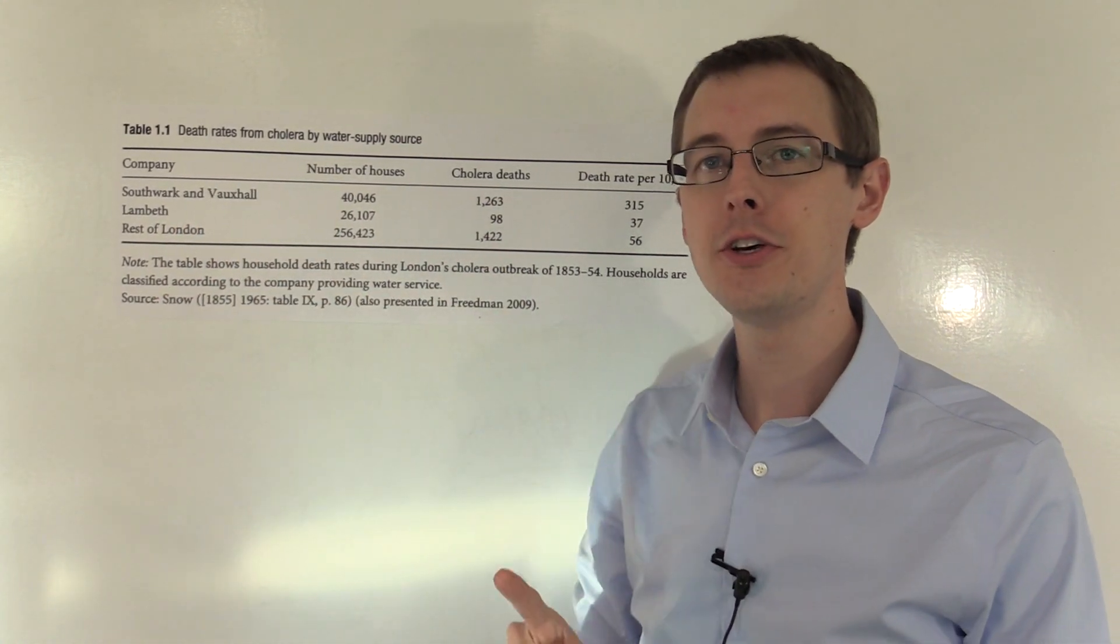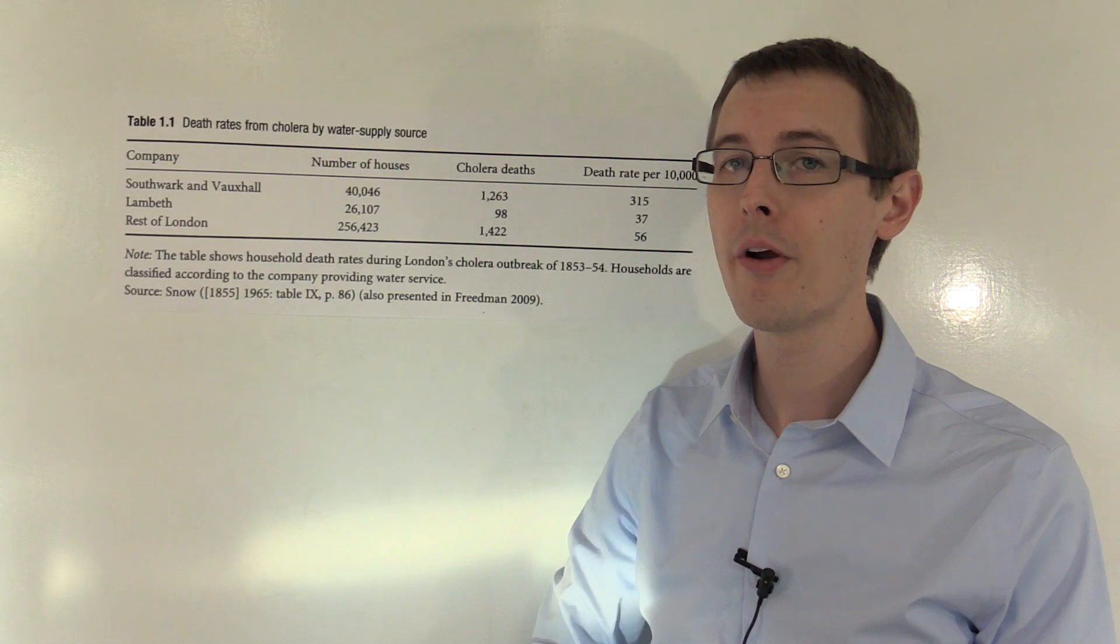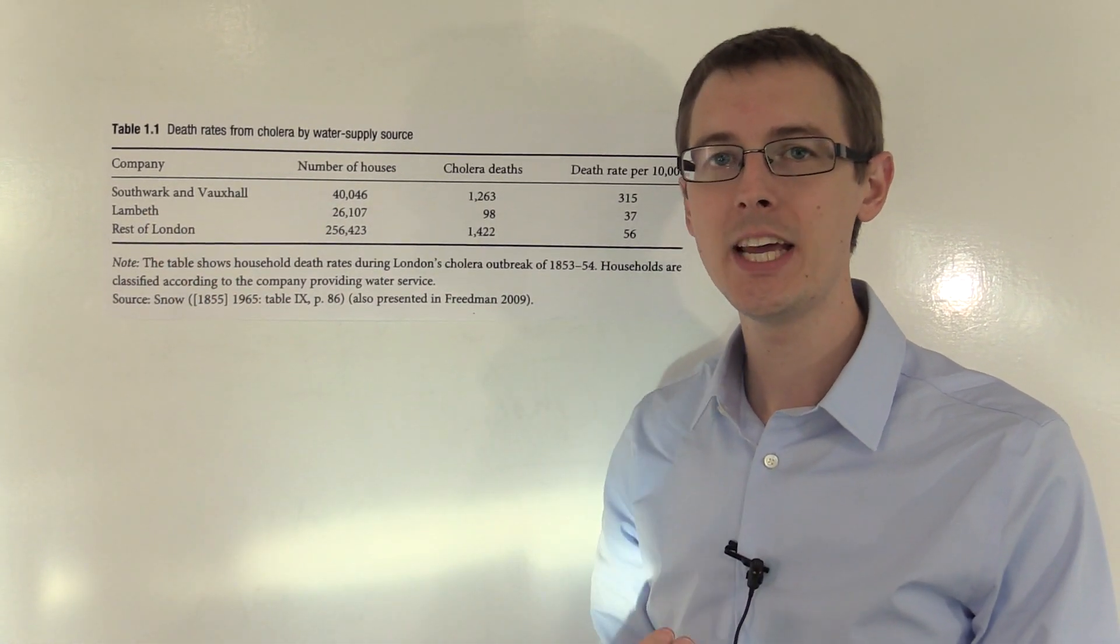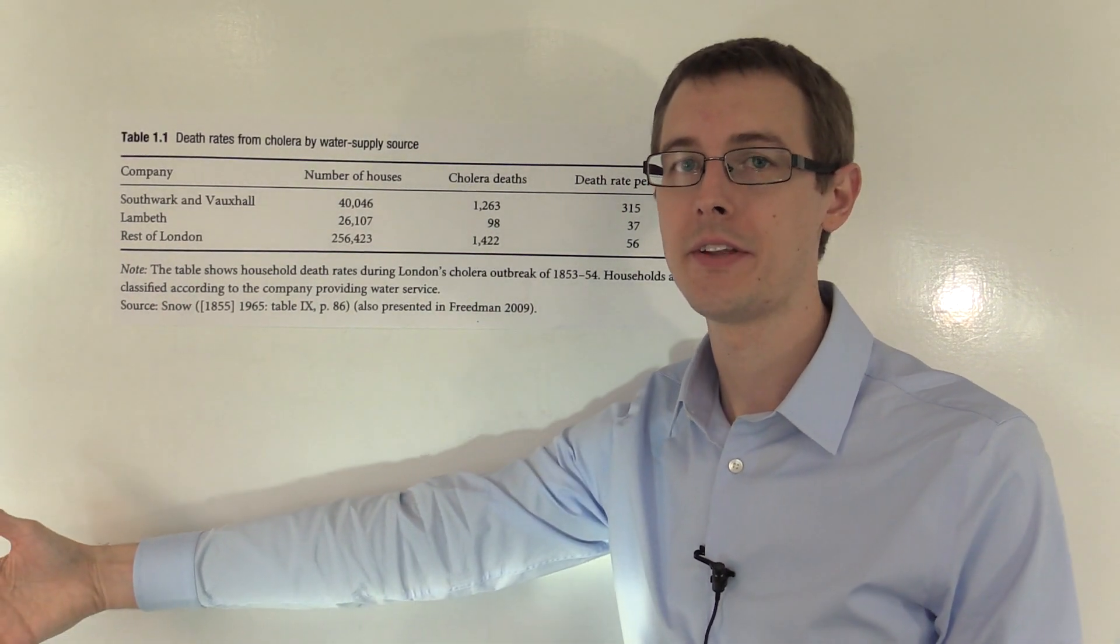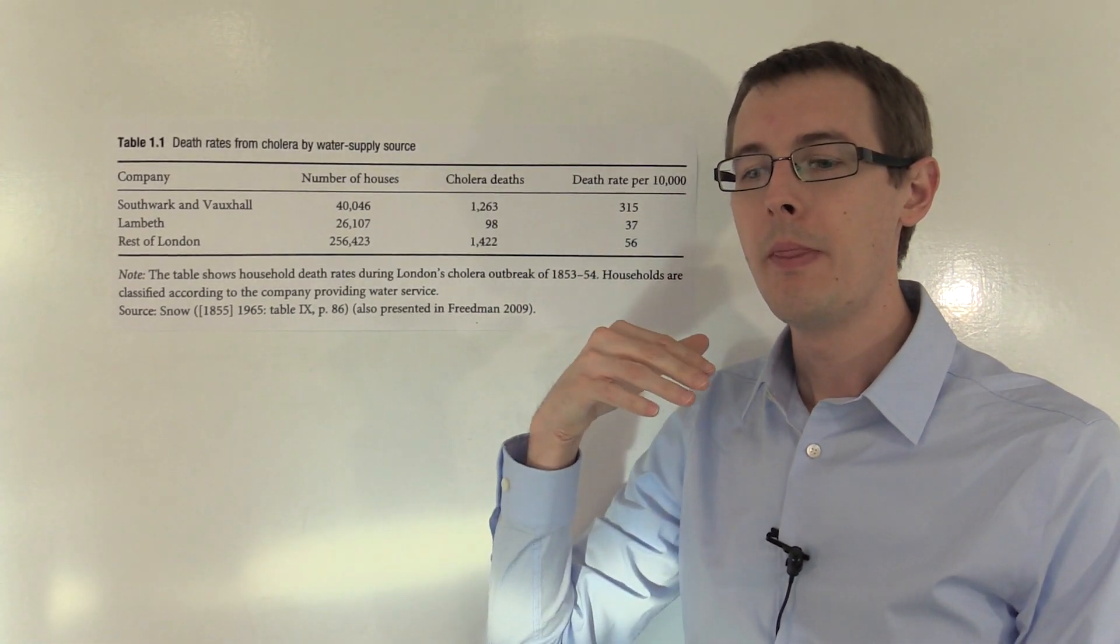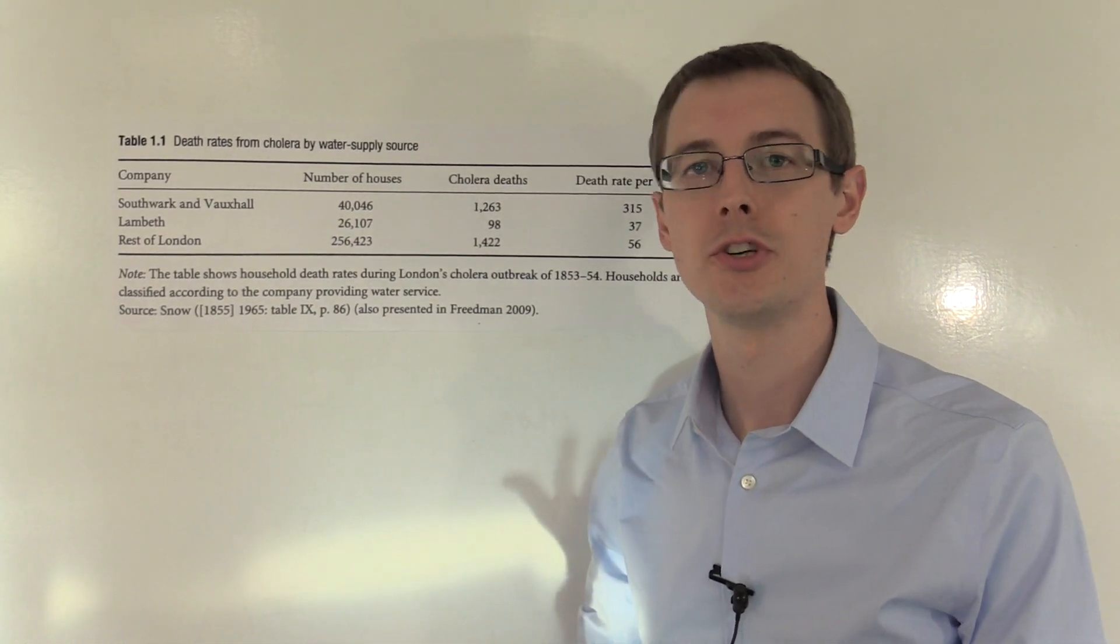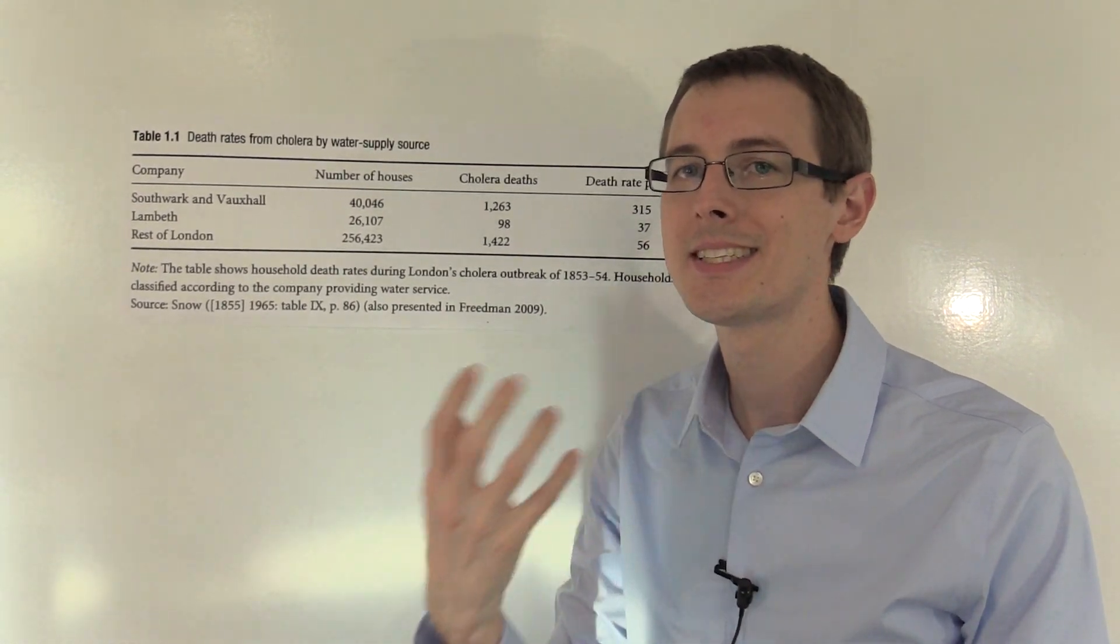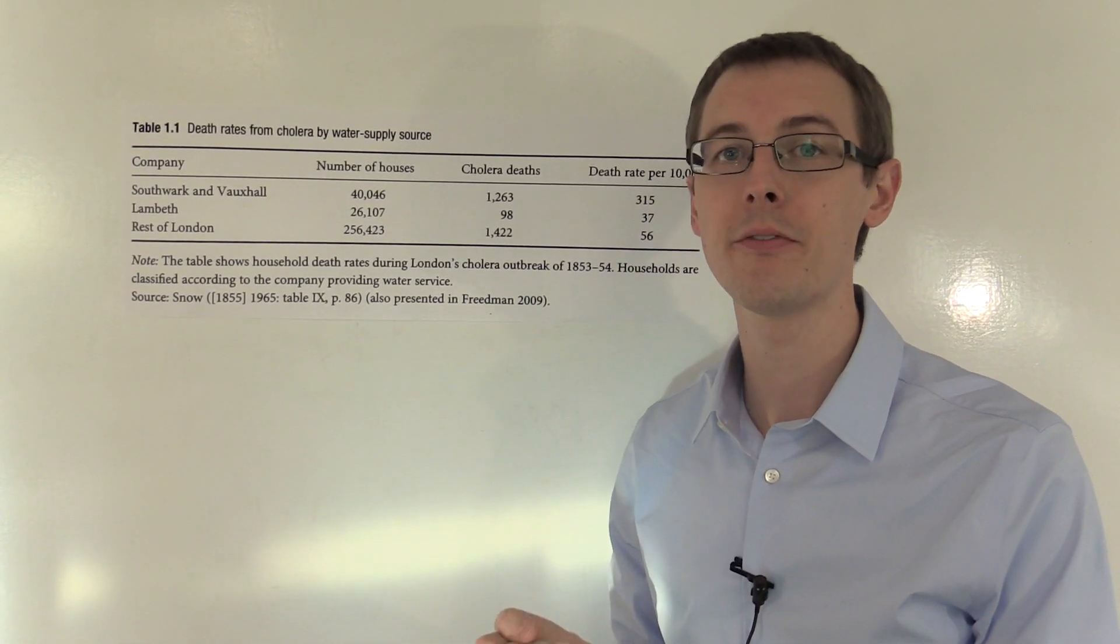In 1852, one year before the epidemic started, the Lambeth Company moved its water intake pipe upstream on the Thames River, before the city. At the time, people were just dumping sewage into the city, into the water, because we didn't know any better. And that was the same place that we were getting the water to drink from.